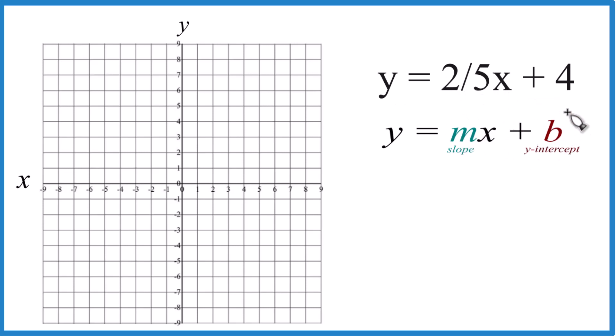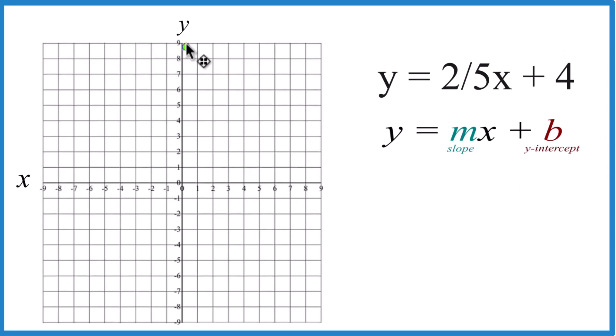So the first thing is we have our y-intercept, that's four. So let's go ahead and just put a point here at four on the y-axis. That's where we're going to cross the y-axis.